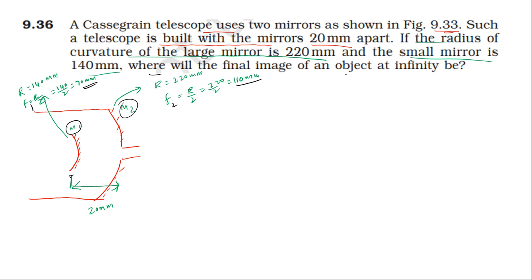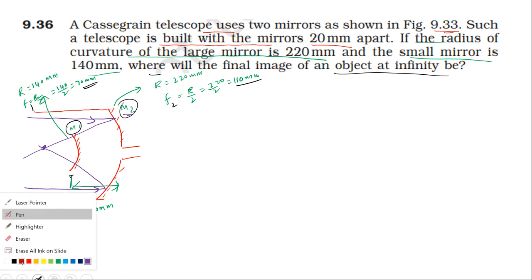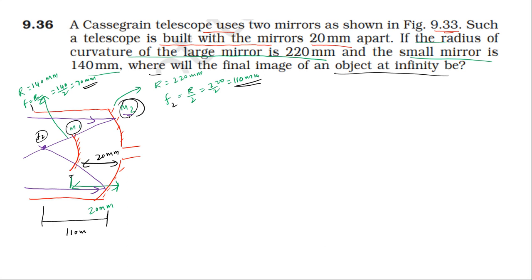The question asks: where will the final image of an object at infinity be? Light from a parallel source hits the first mirror, and the reflected light converges at the focal length. The focal point is at a distance of 70 millimeters from the first mirror. The second mirror is 20 millimeters from the first mirror, so the distance between them is 20 millimeters.